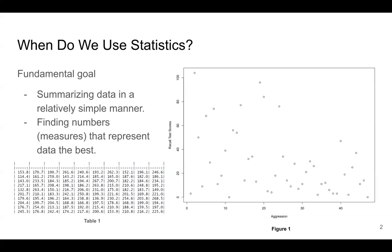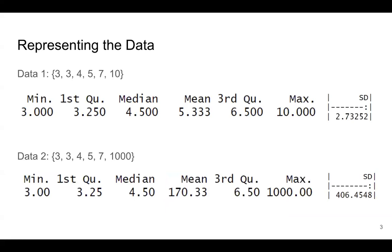So let's see how those measures represent the data. So we have two samples, data one and data two. Data one has 3, 3, 4, 5, 7 and 10. The mean of data one is 5.3.